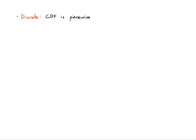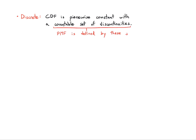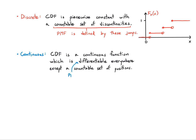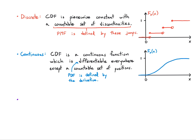A discrete random variable has a CDF which is piecewise constant with a countable set of discontinuities — it jumps up by the value of the PMF at points in the range. A continuous random variable has a CDF that is continuous and differentiable everywhere except for a countable set of positions, so we can take the derivative to get the PDF.